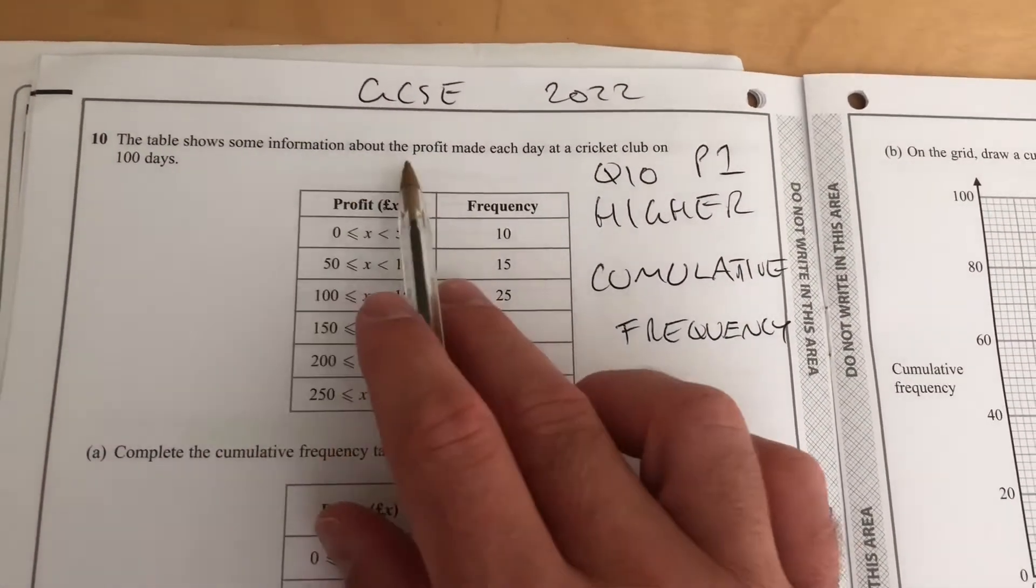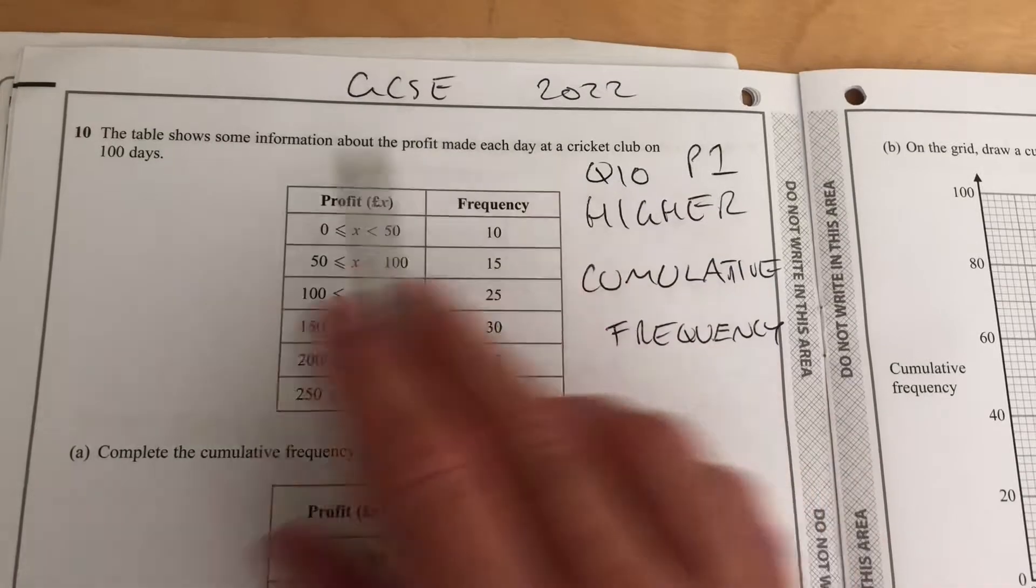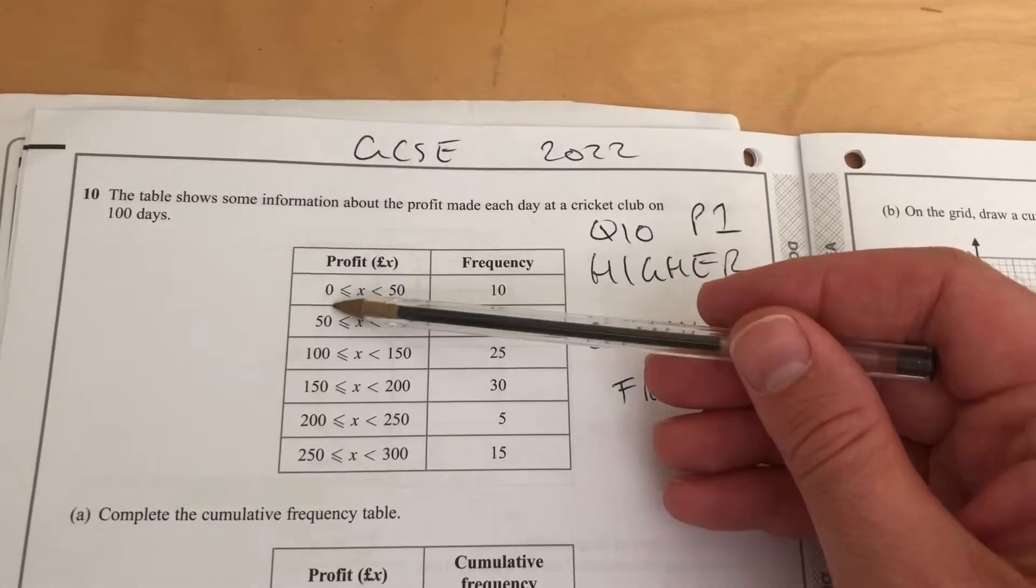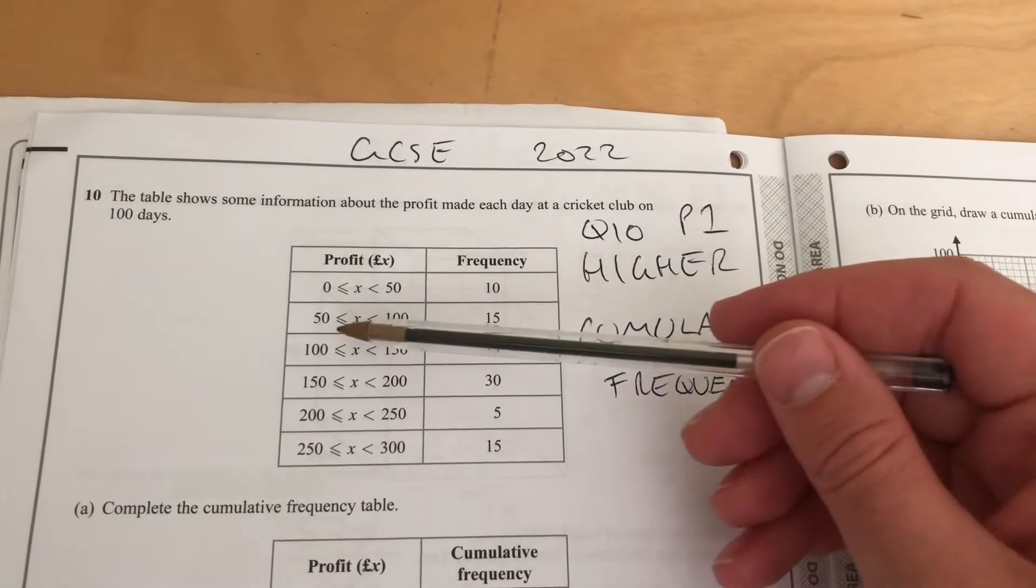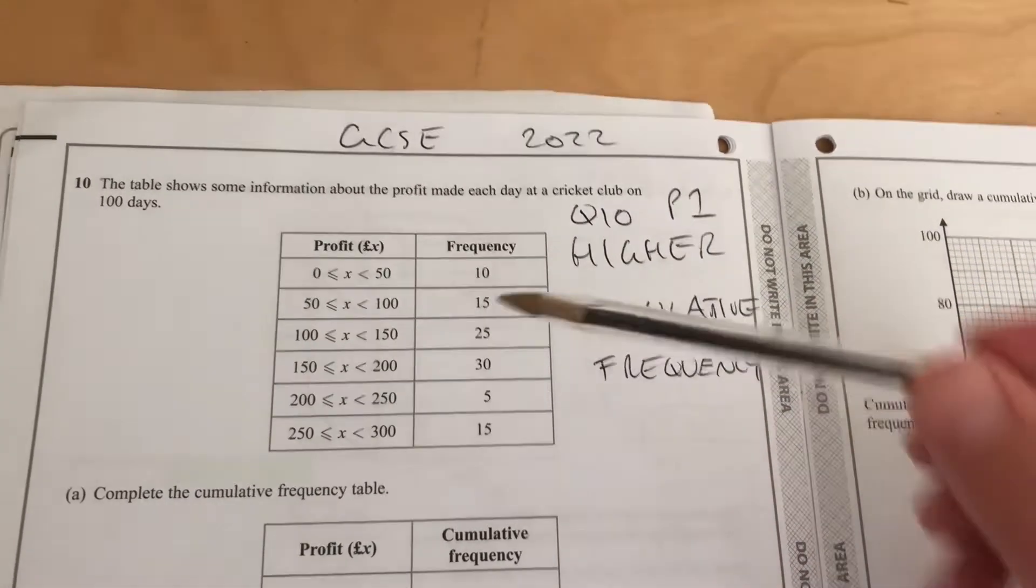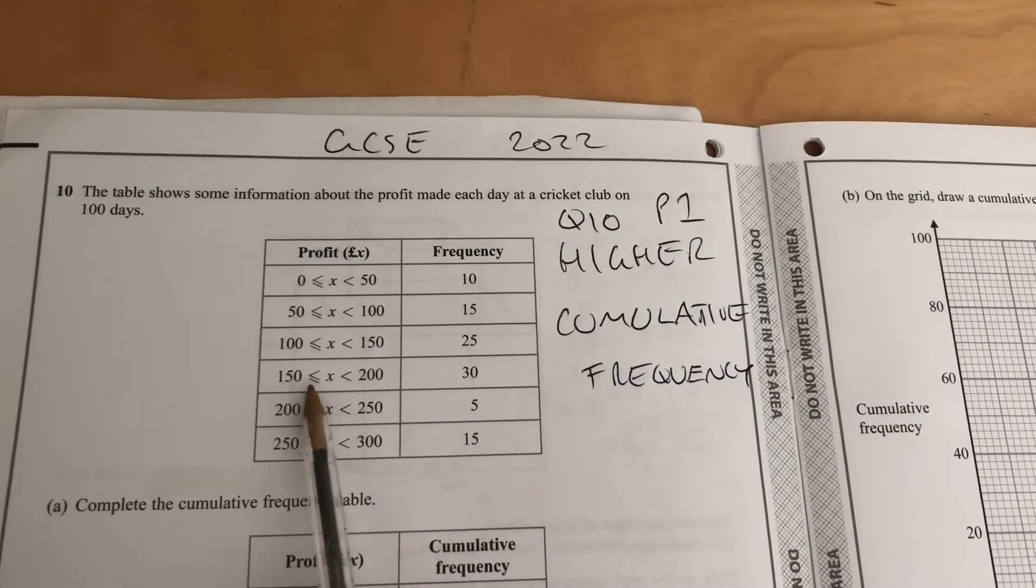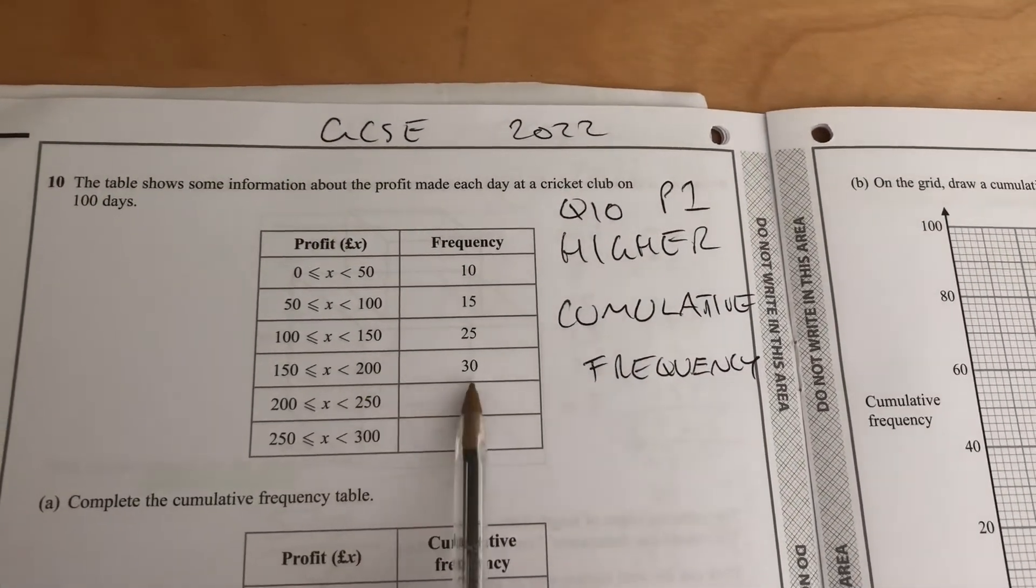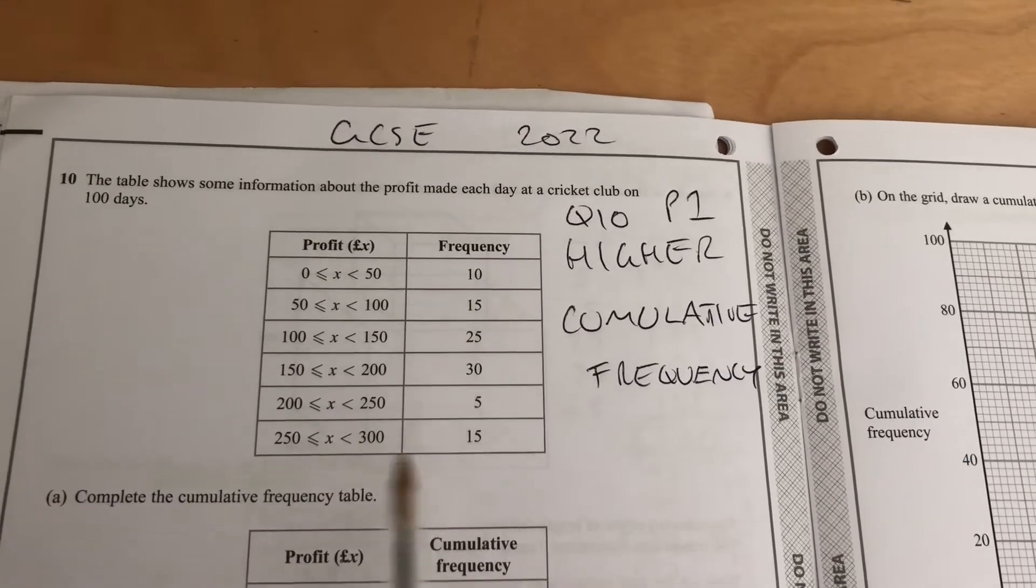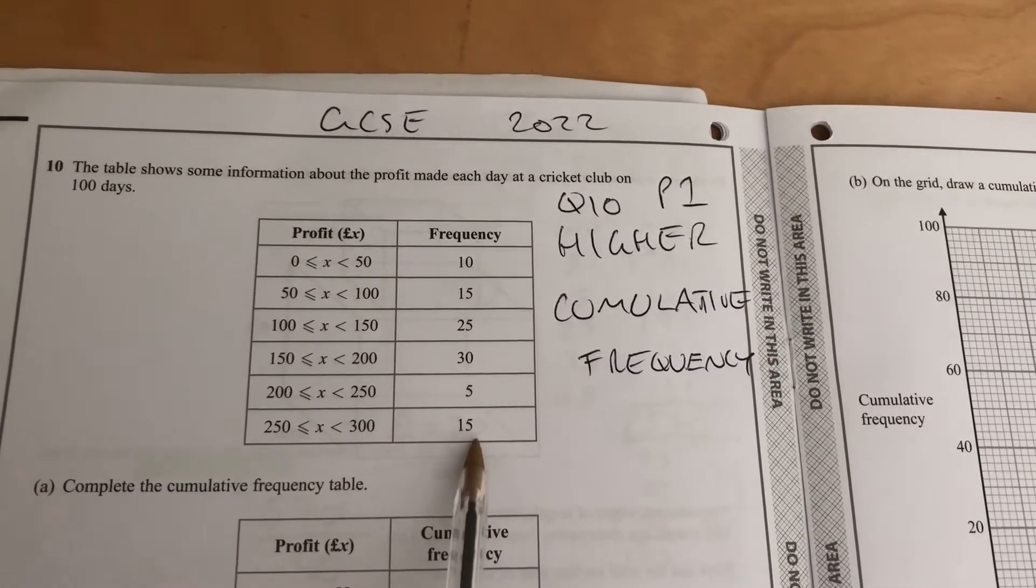The table shows some information about the profit made each day at a cricket club on 100 days. So the profit between 0 and £50, 10 days; £50 to £100, 15 days; £100 to £150, 25 days. Notice the inequality is including that but not including that. £150 to £200 is 30 days, £200 to £250 is 5 days, and £250 to £300 is 15 days.